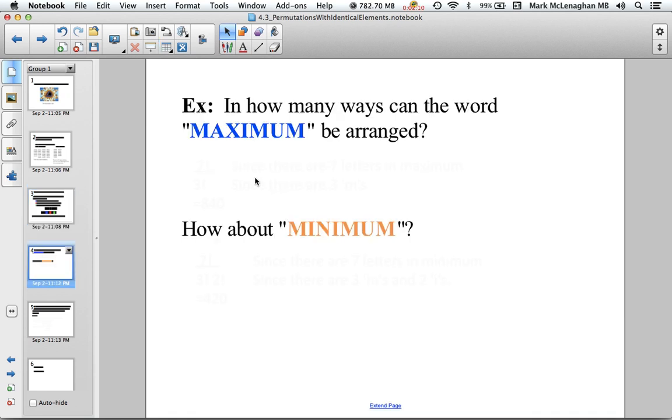How does that work with MAXIMUM? Let's apply the formula. Okay, so there's seven letters in maximum. So seven factorial, and there's three M's. So three factorial, so seven factorial divided by three factorial is 840 permutations.